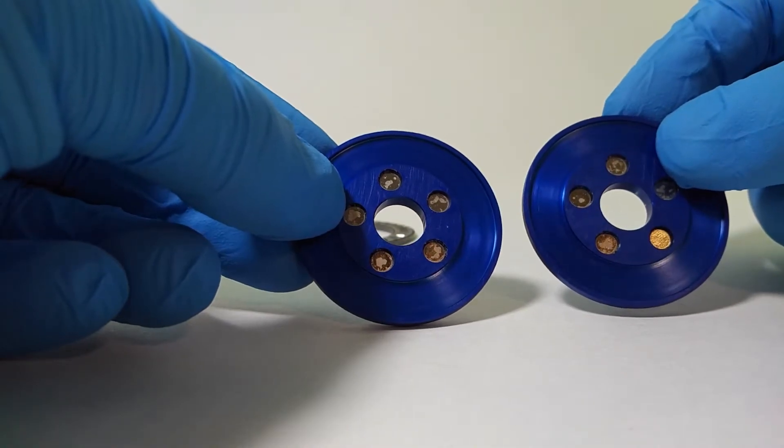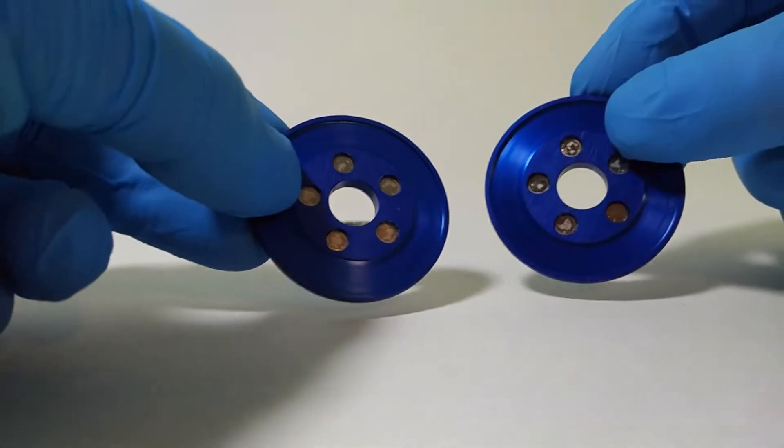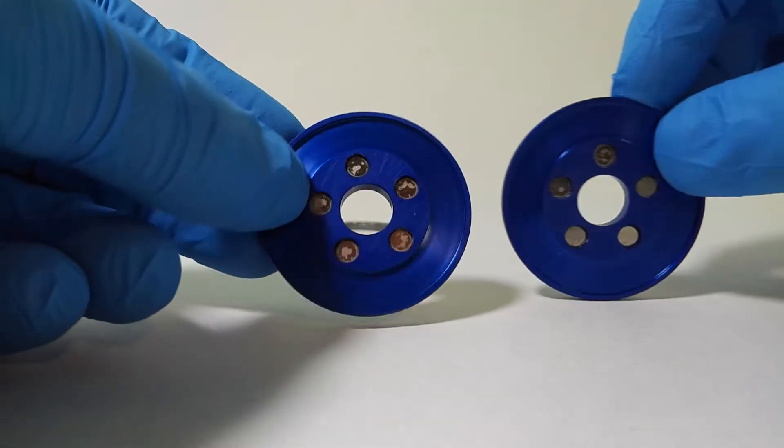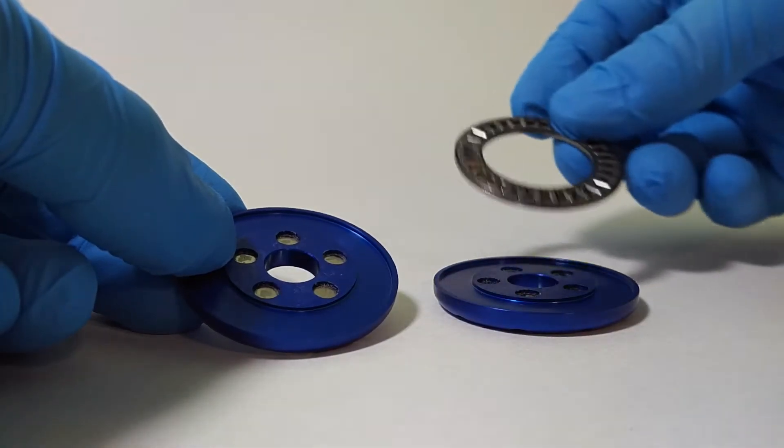Each shell contains five attracting magnets. That's what holds the whole assembly together. It's very easy to put back together.